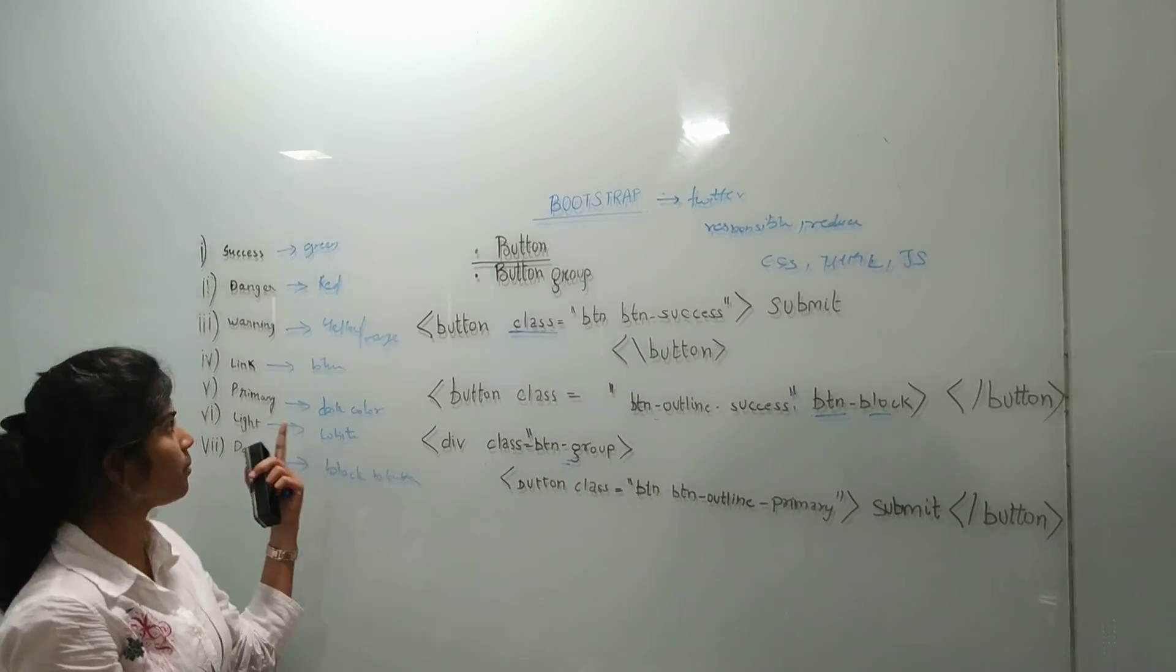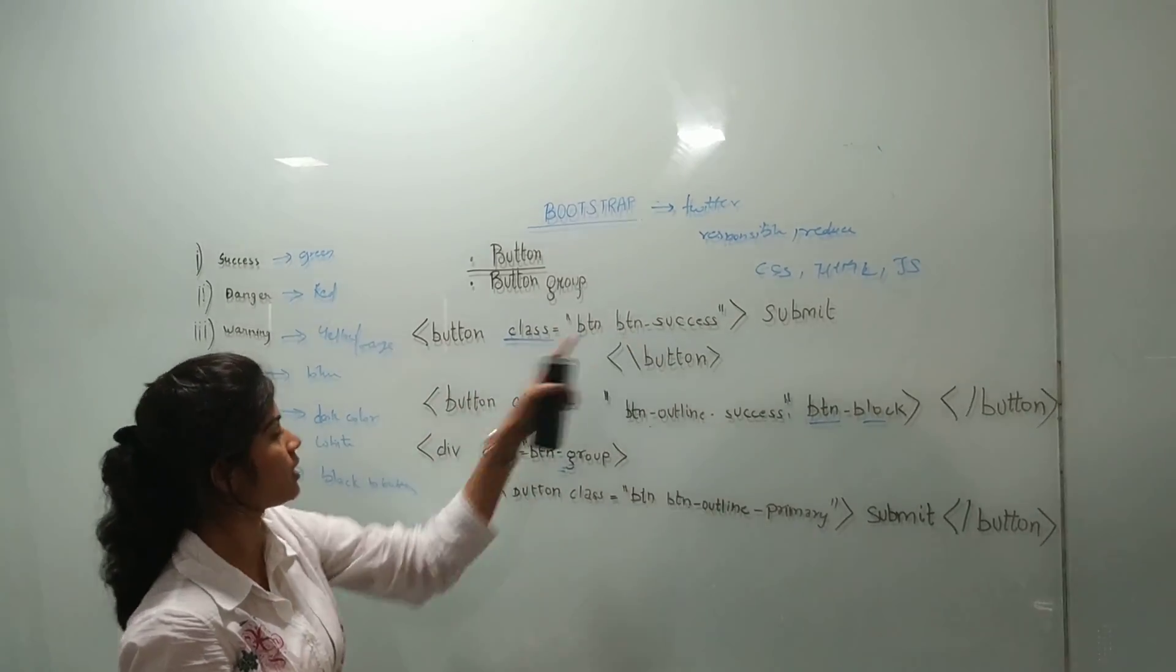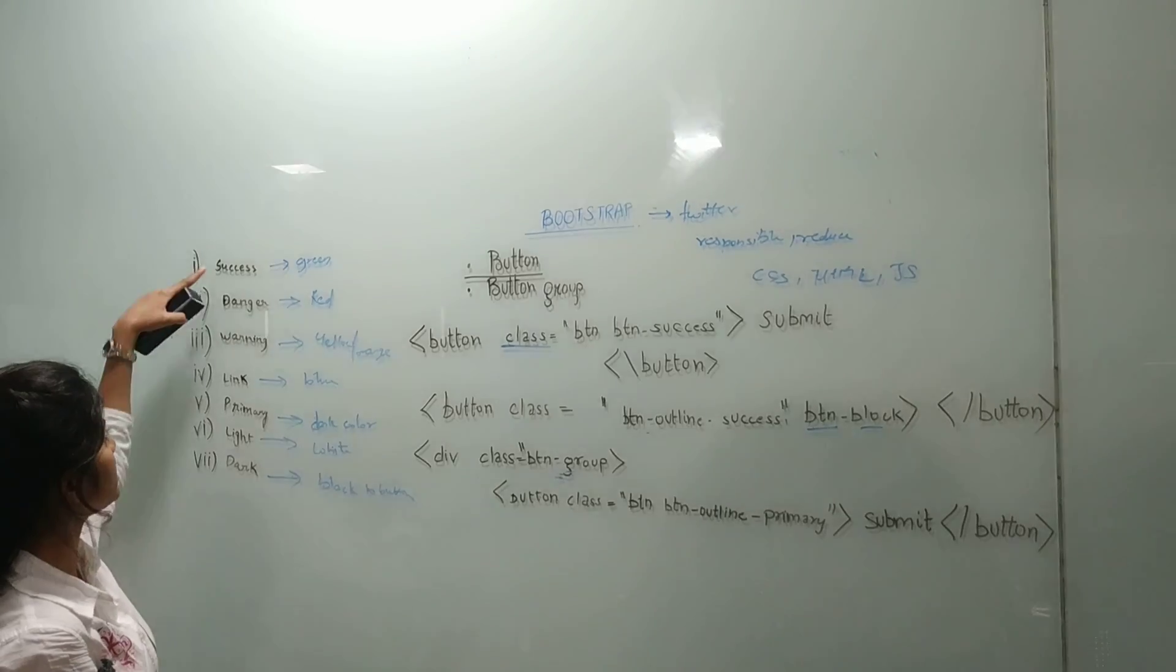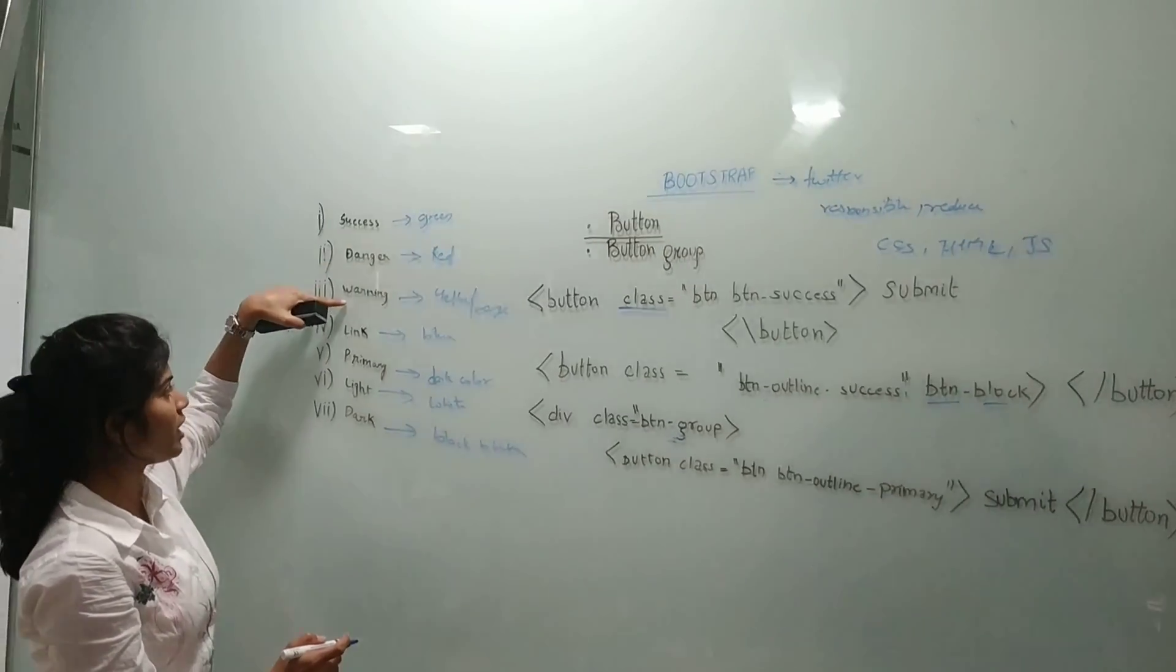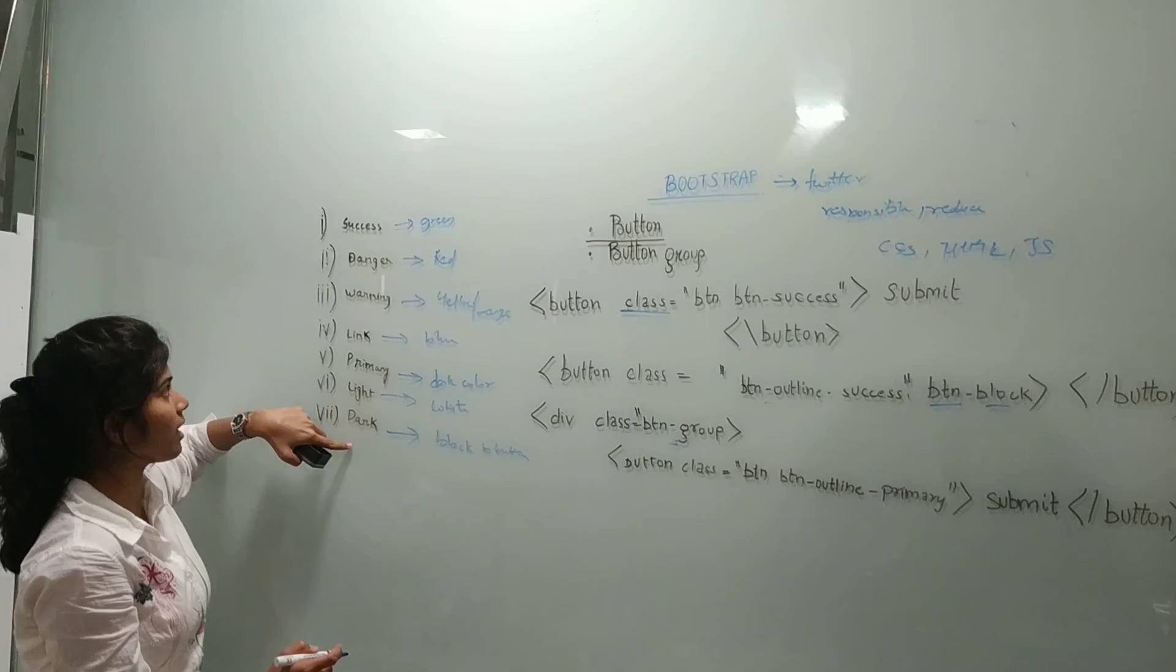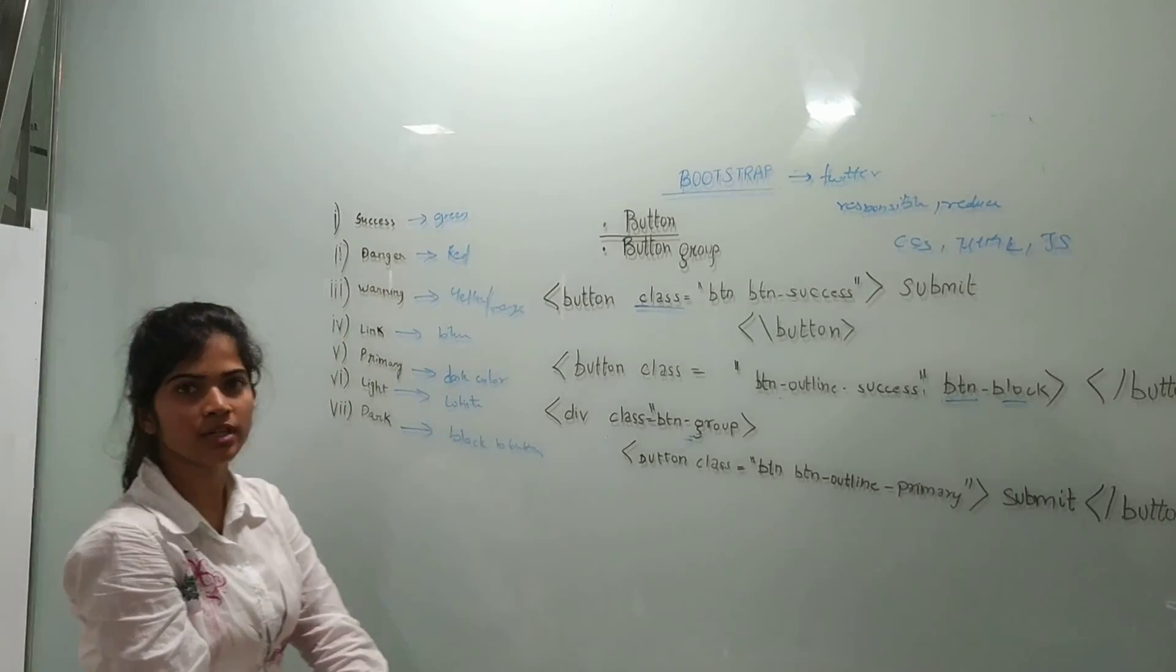As there are many kinds of button methods, for example success, danger, volume, rain, primary, light and dark. Each of them have different colors.